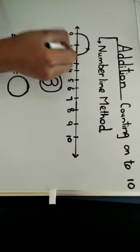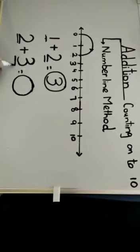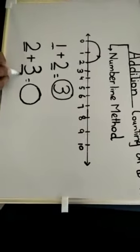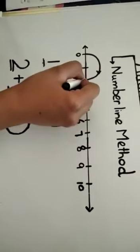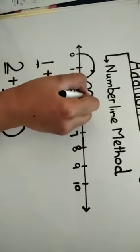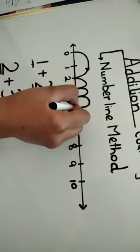After that you have to look at the second number and you have to jump according to the second number. Because there is number three so you have to jump how many times? Three times. One, two, and three.